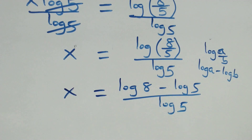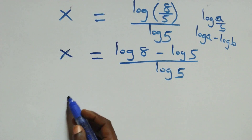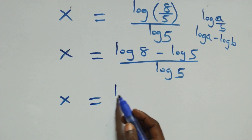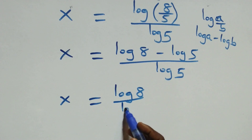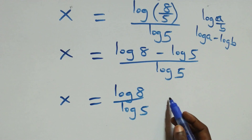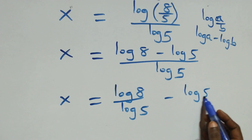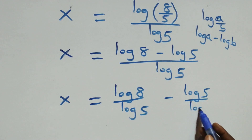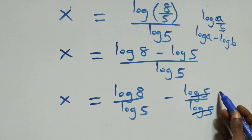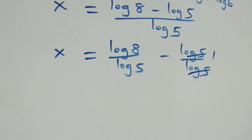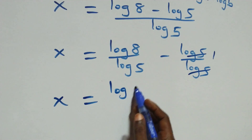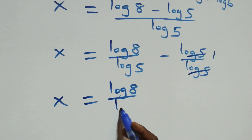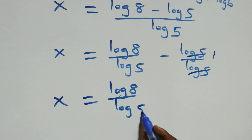Next step, we separate this into two fractions: x equals log 8 over log 5, minus log 5 over log 5. Then log 5 over log 5 cancels to give 1, which implies x equals log 8 over log 5 minus 1.